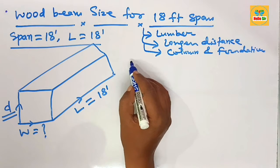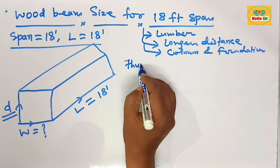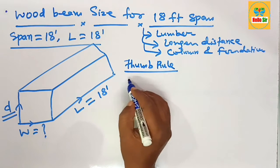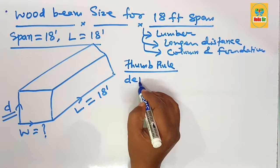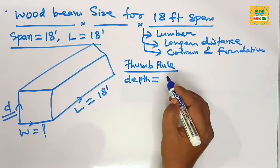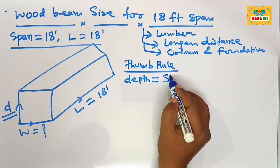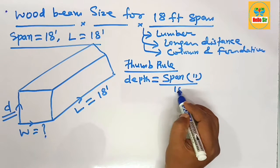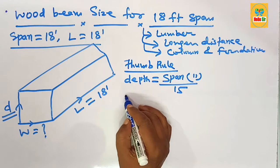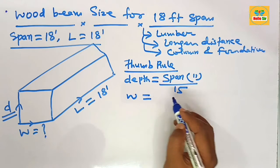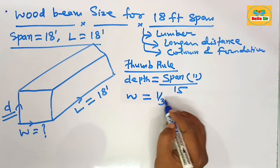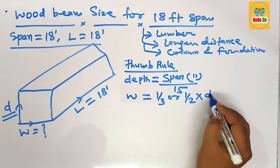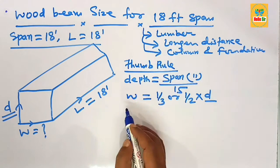We calculate the wood beam size according to the thumb rule. The thumb rule for wood beam states: the depth section of the beam equals the span in inches divided by 15, and the width section of the beam is one-third or one-half of the depth section of the beam.